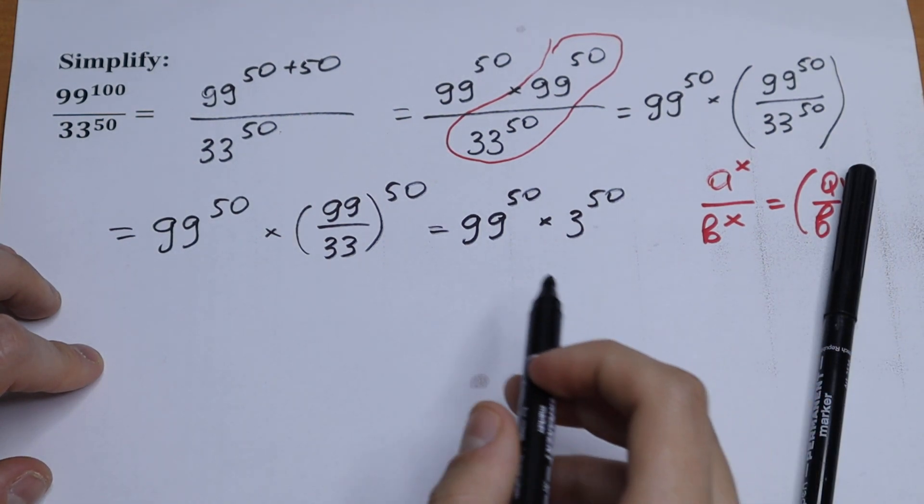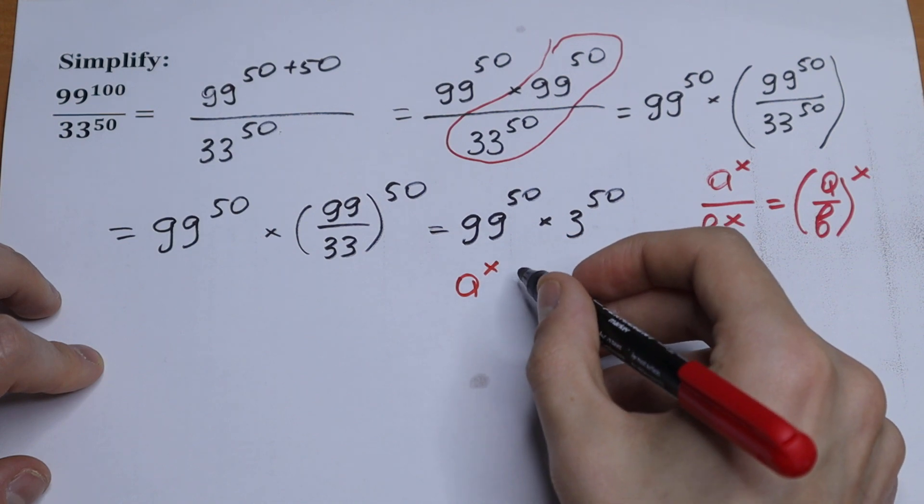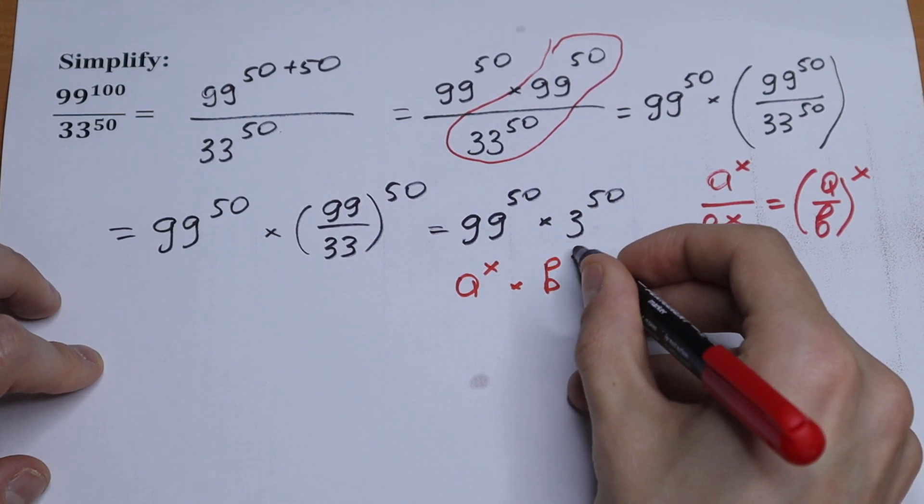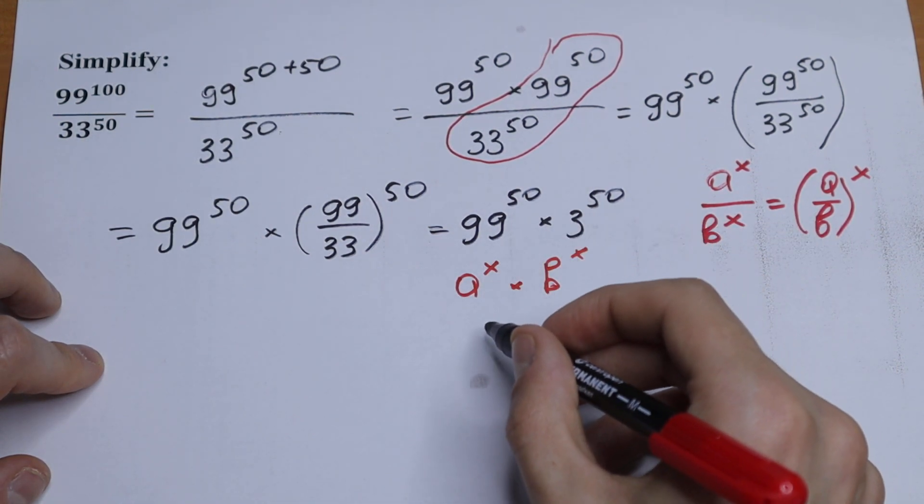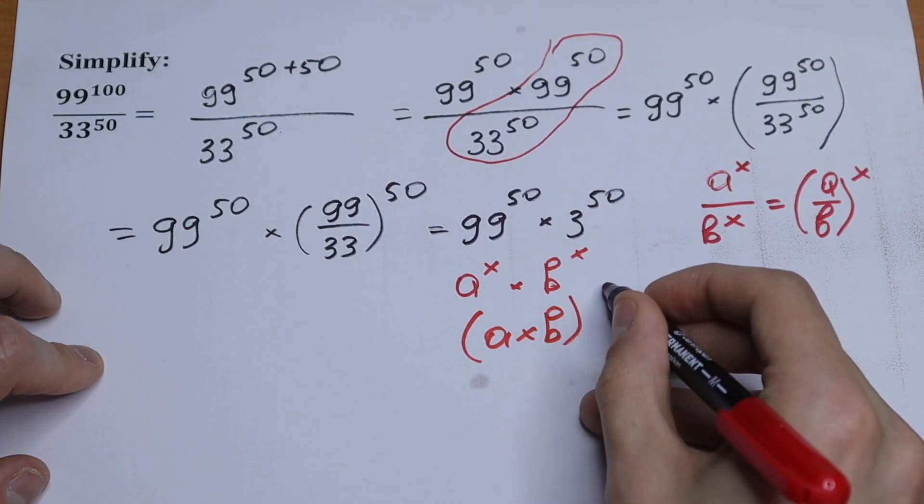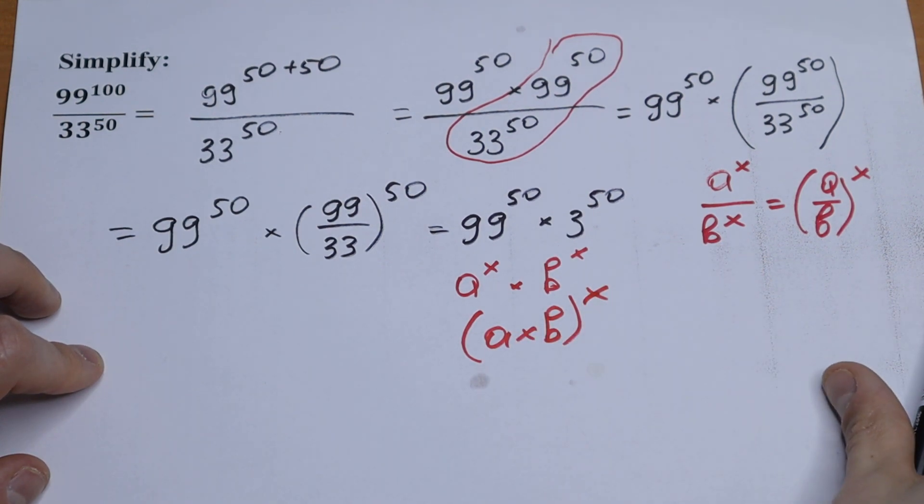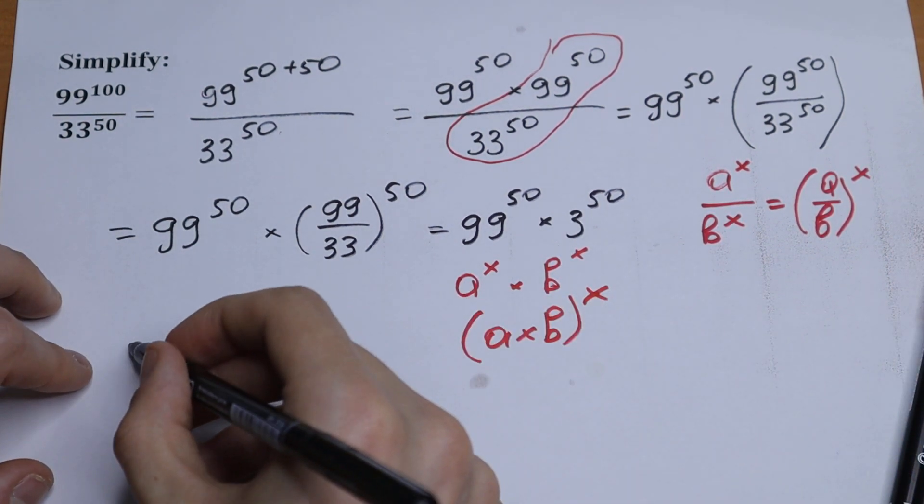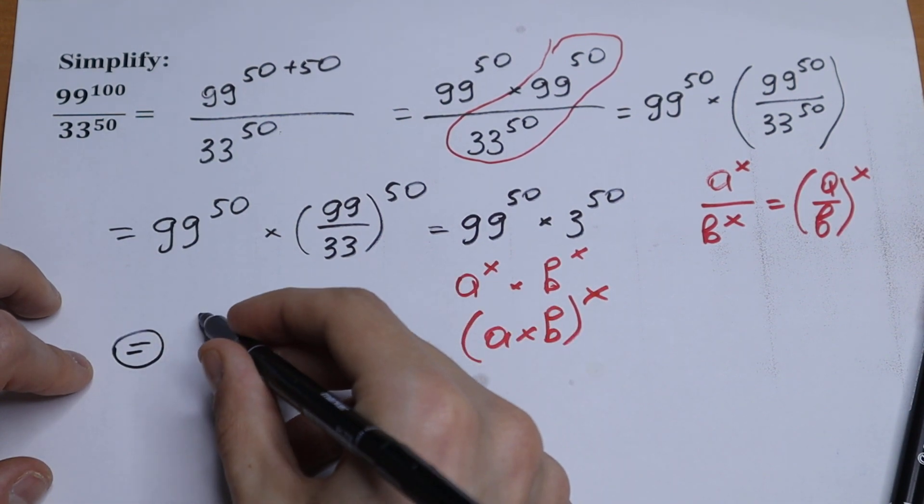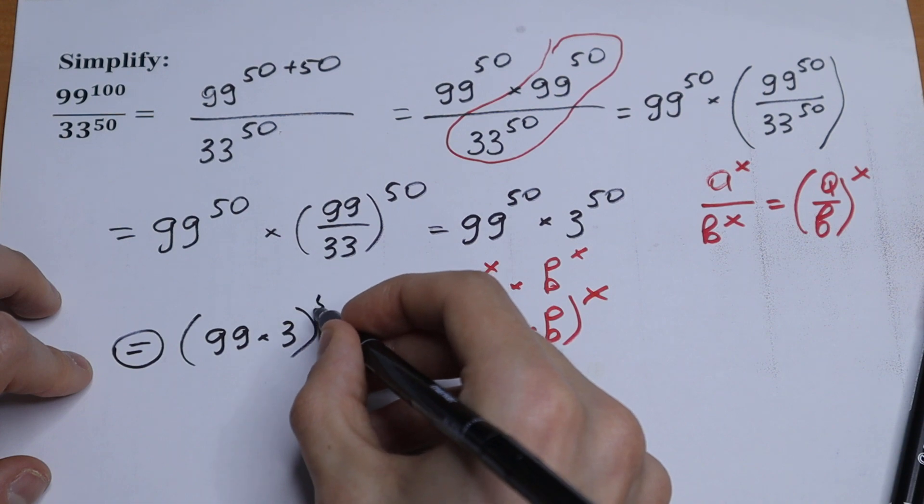And the last step, we will know that if we have a to the power x times b to the power x, so different bases but same exponent, we can write it as a times b all raised to the power x. So we can write this as product to the power x. So as a result we will have our final answer: 99 times 3 all raised to the power 50.